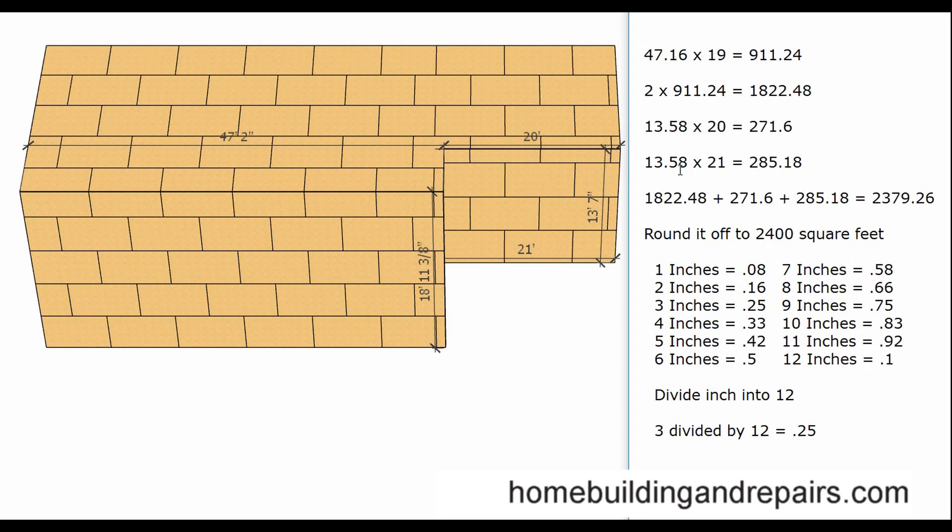We have the areas here. And remember we made this 21 feet because we needed to add another foot underneath the overhang here. If we add these numbers together, the 1822.48 is these two sections here, this section right here, and this section will be these two right here. Total footage, 2379.26 square feet.